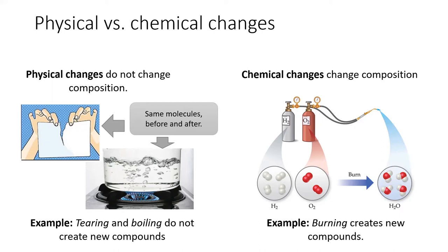In order to reverse a physical change, we need to apply another physical change, and in order to reverse a chemical change, we need to apply another chemical change. In general, it is more difficult to reverse chemical changes than it is to reverse physical changes.